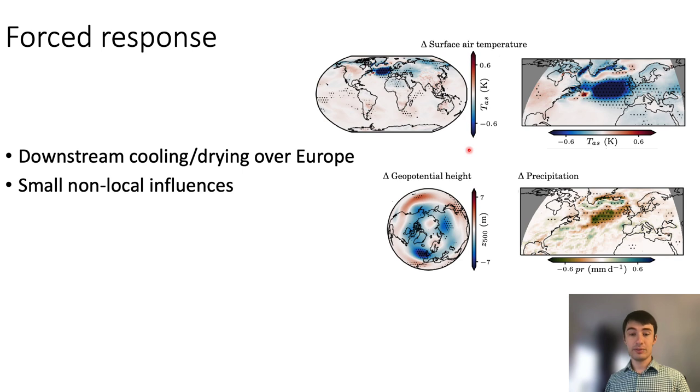The same story holds for other variables, for example precipitation, where we see, corresponding to the cooling, a local drying reduction of precipitation in the North Atlantic and in parts of Western Europe, but relatively little elsewhere.